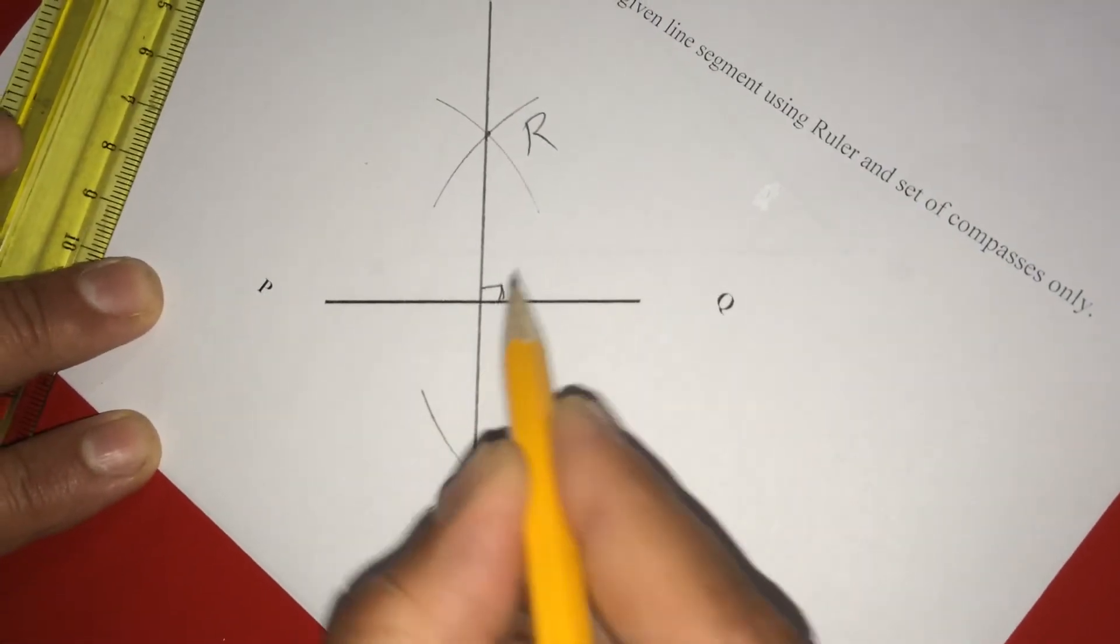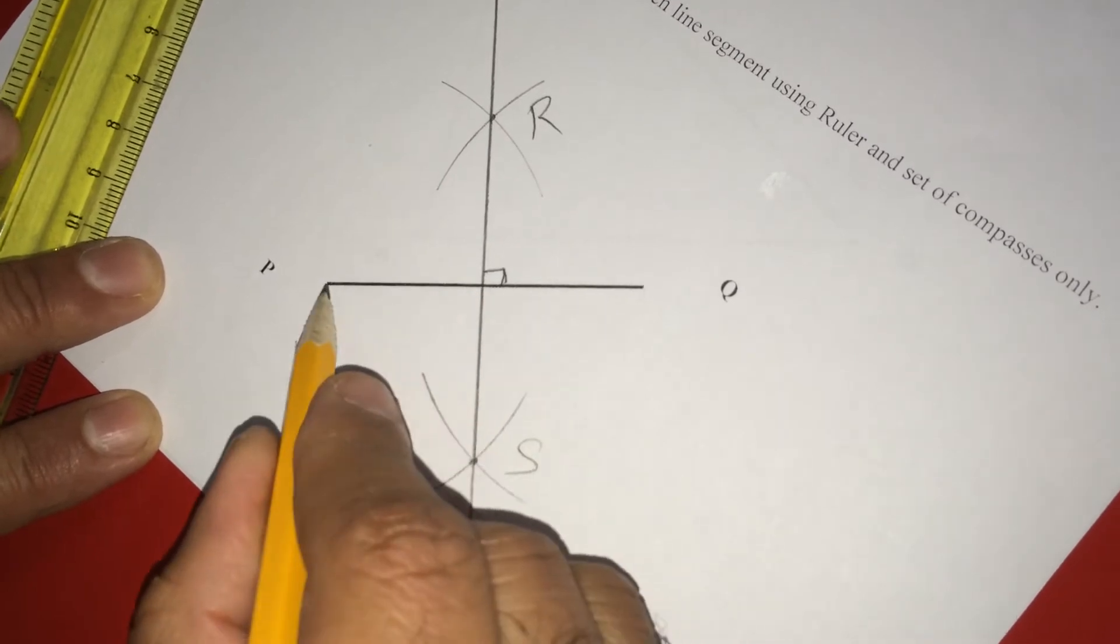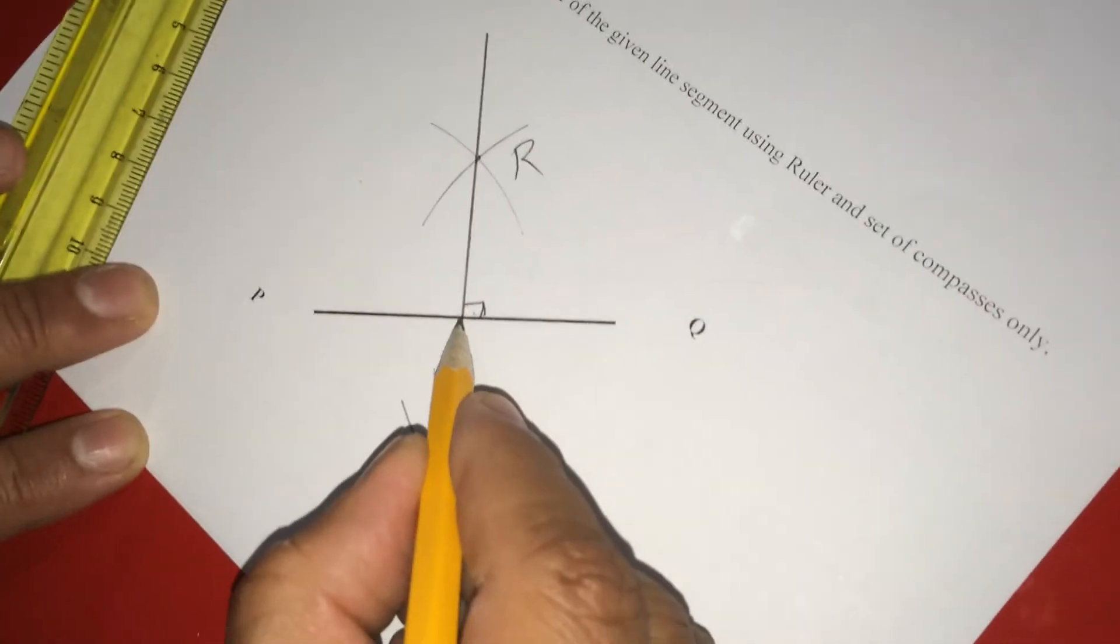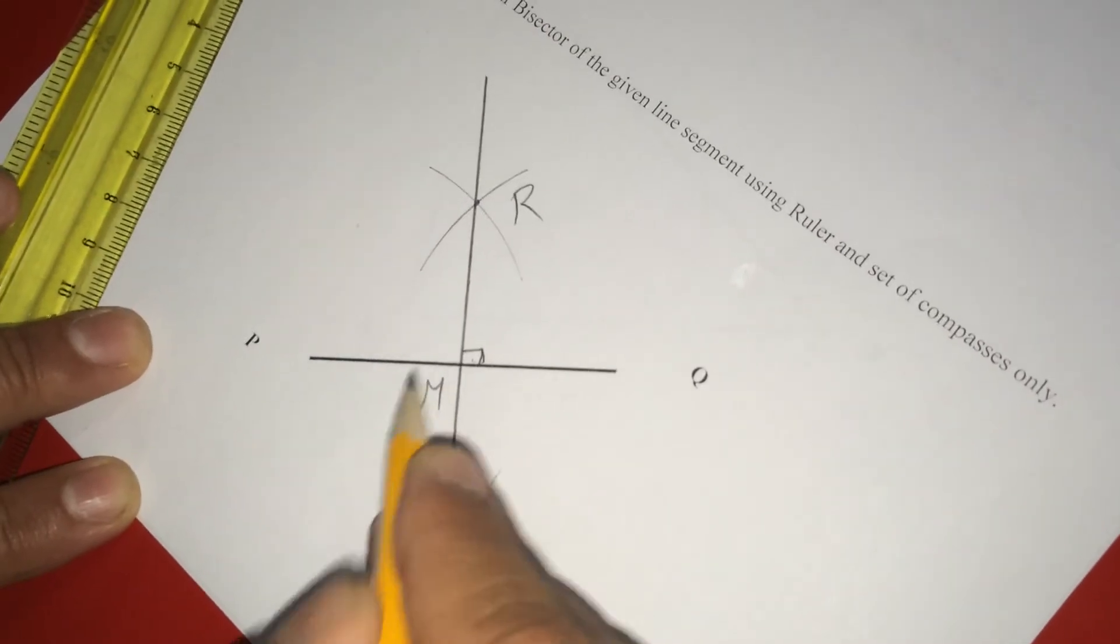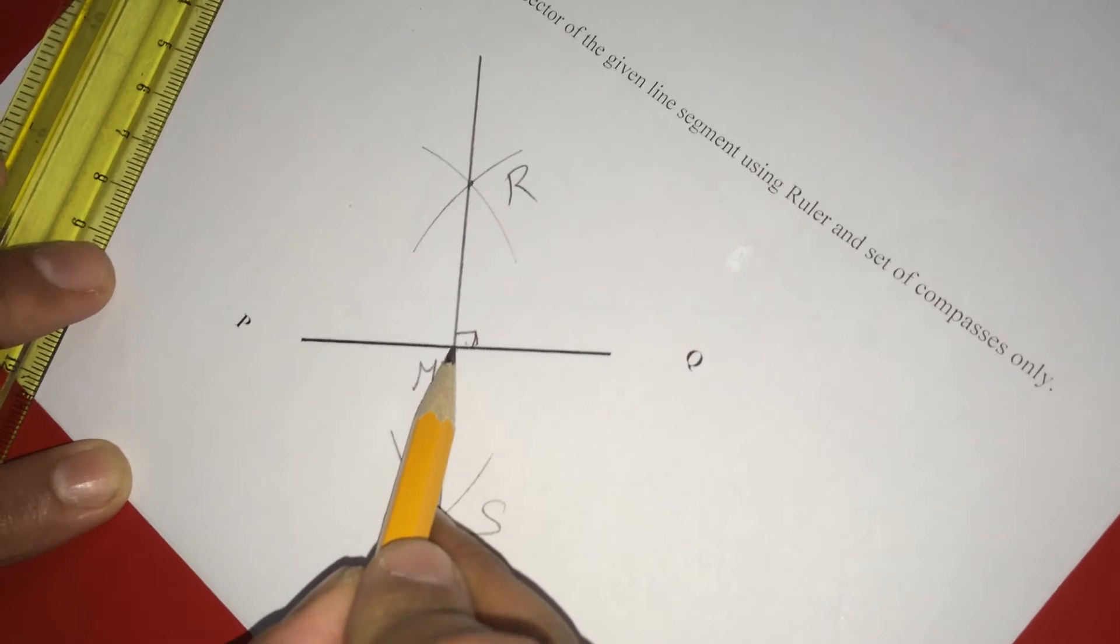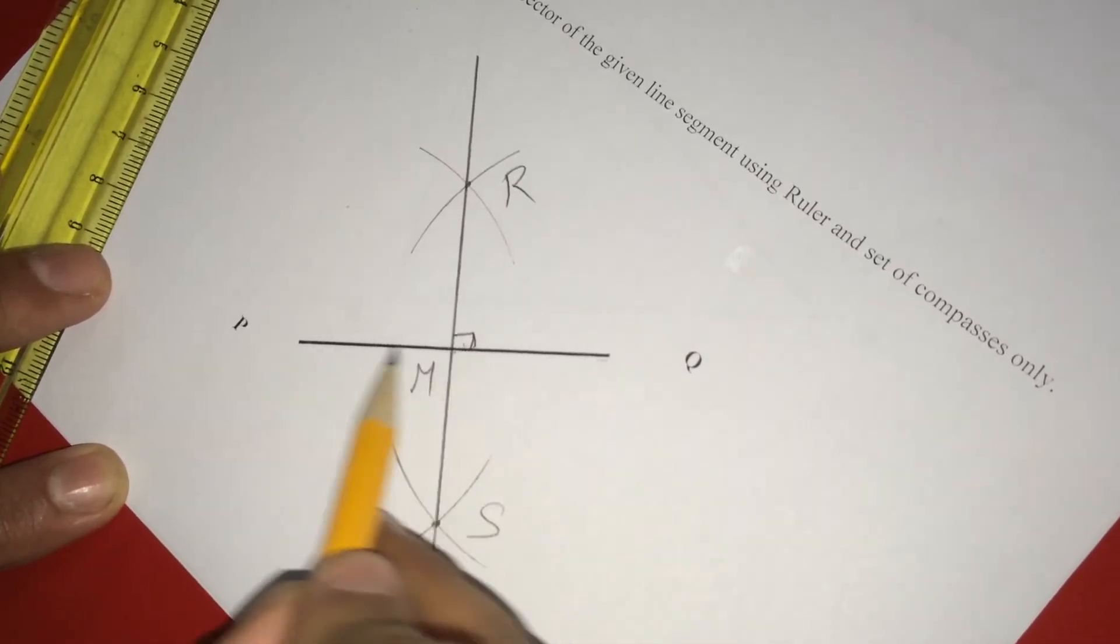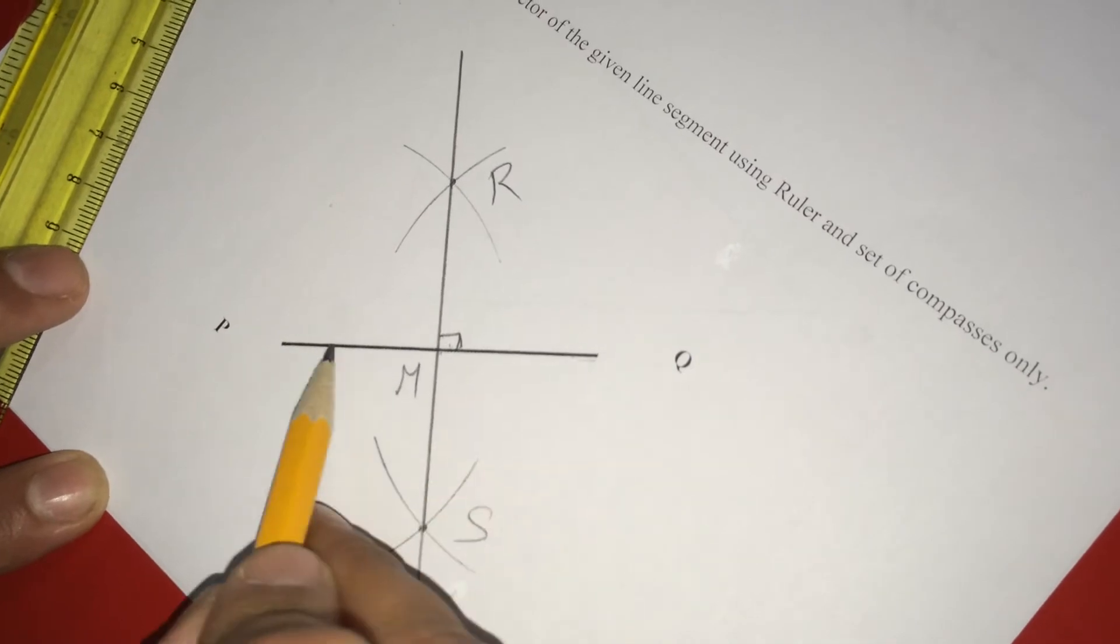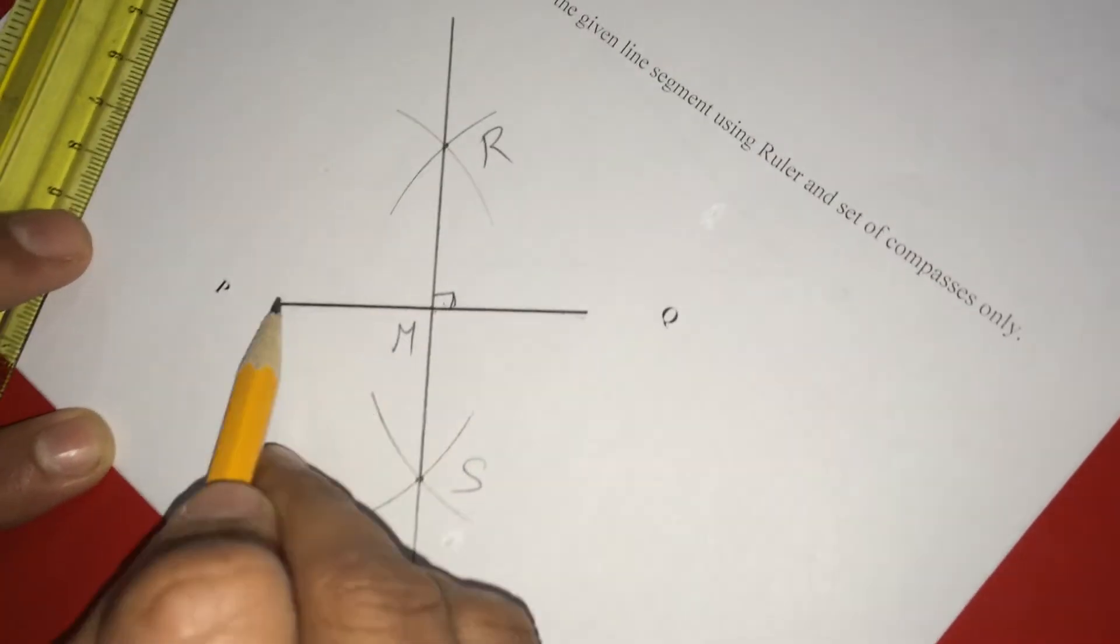That means, if you measure this angle, it will be definitely 90 degrees. And also, if you name this as M, this M will be the middle point of this PQ. That means, this is the midpoint. Suppose if it is 10, this will be 5 and 5. Whatever the length, half of that will be from M to P and the remaining half M to Q.